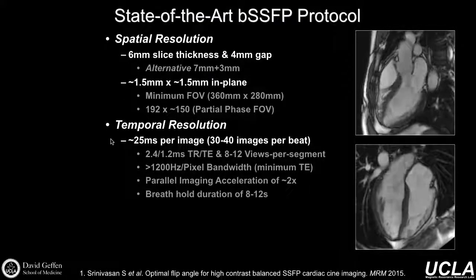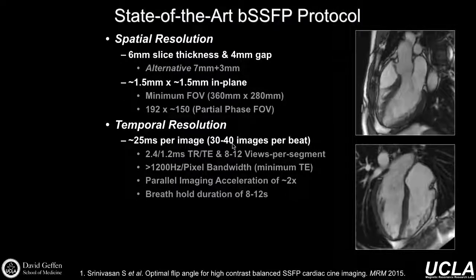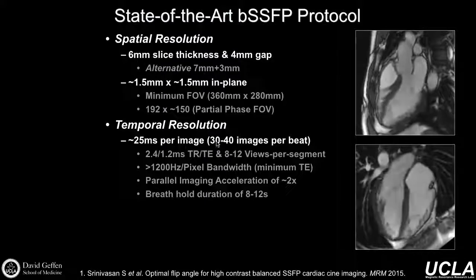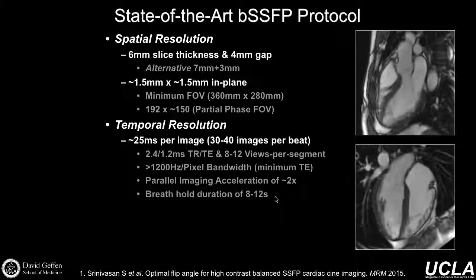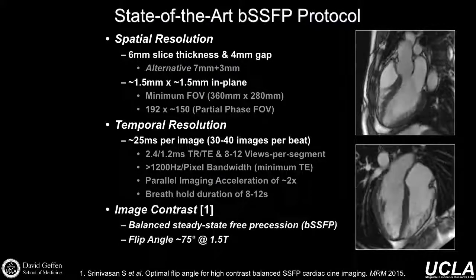Temporal resolution — the higher the better to a certain extent, except that it has an impact on overall breath hold time. It's certainly nice to get 30 or 40 images per cardiac cycle, but depending on your scanner and setup you may be closer to 20 or 25 images per cardiac cycle. For most patients we're trying to limit the breath hold duration to maybe eight or ten seconds per slice.